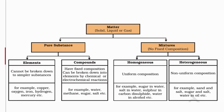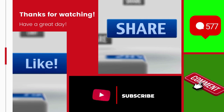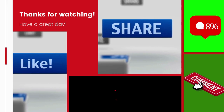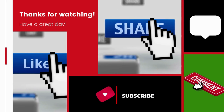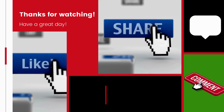In conclusion: matter can be solid, liquid, or gas — it can be a pure substance or a mixture. Pure substances can be elements (cannot be broken down by chemical reactions) or compounds (fixed composition, broken down into elements by chemical or electrochemical reactions). Mixtures can be homogeneous (uniform composition) or heterogeneous (non-uniform composition). We hope you found the video interesting — please share with other grade 9 students, let us know which part you liked best in the comments, hit the like button, and subscribe to the channel. Stay kind, be good, bye-bye.